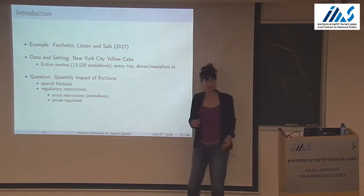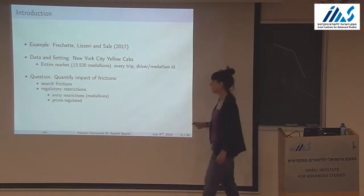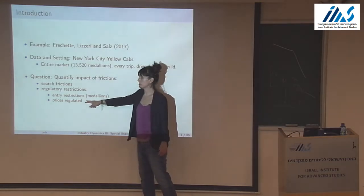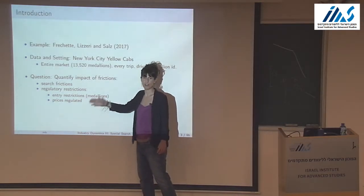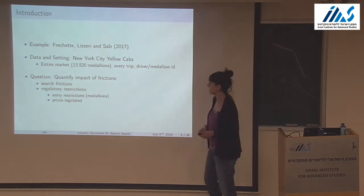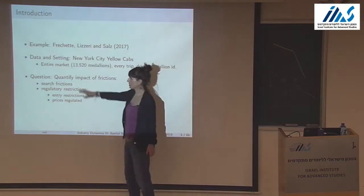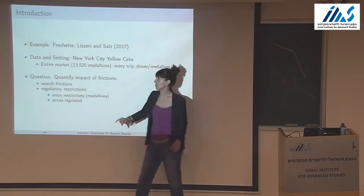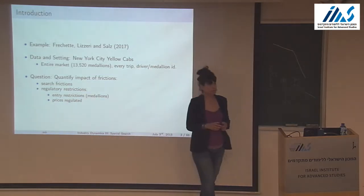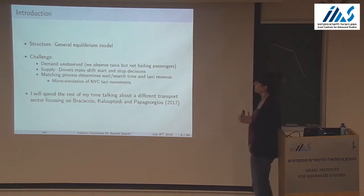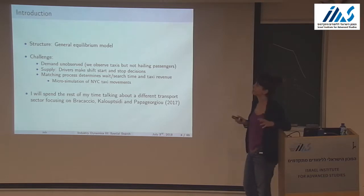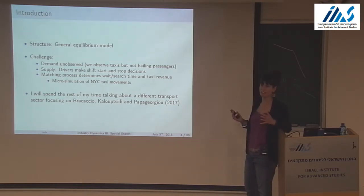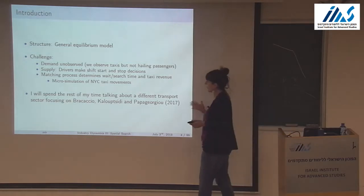Prices are regulated by a specific tariff structure, and the question is: what is the impact of these frictions? They focus on search and entry restrictions. They write down a general equilibrium model with a demand side and a supply side. The big challenge is that demand is not observed — you see all trips but don't know who was actually searching for a cab.